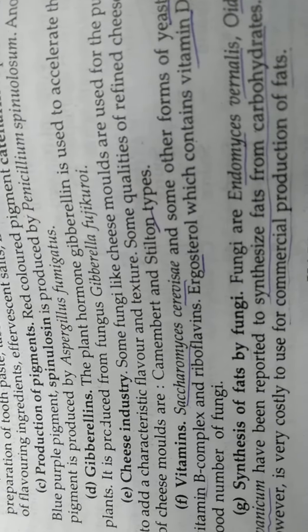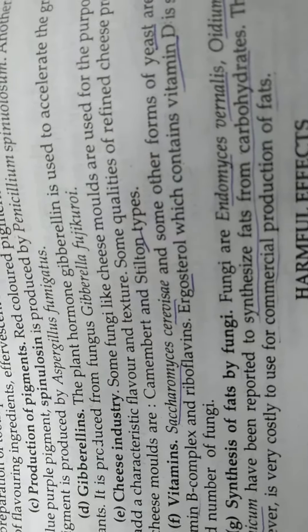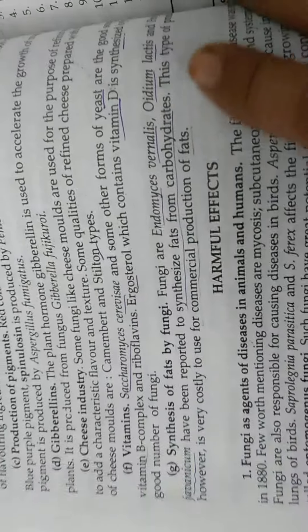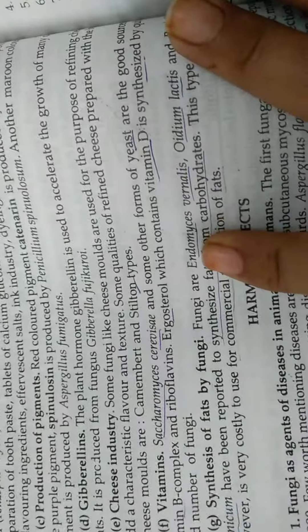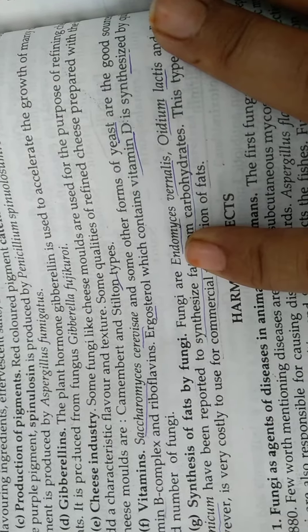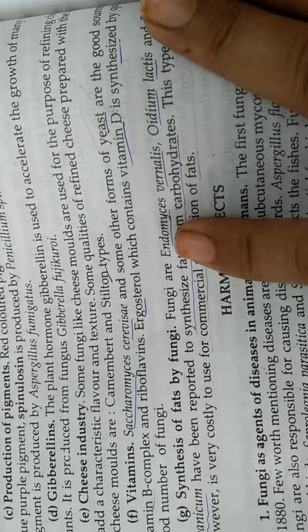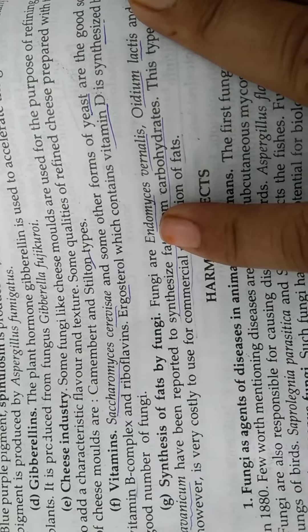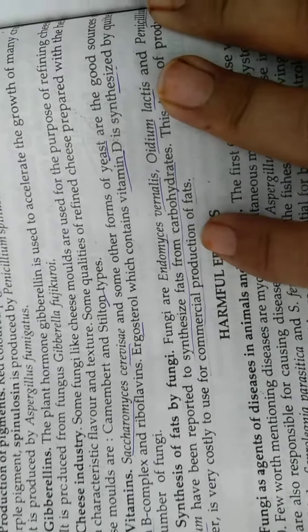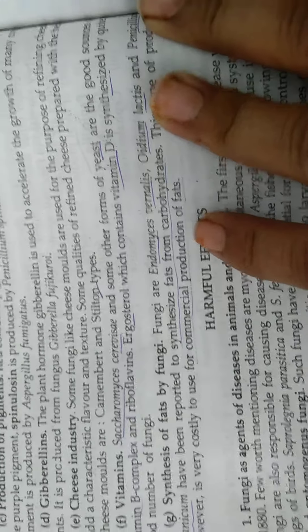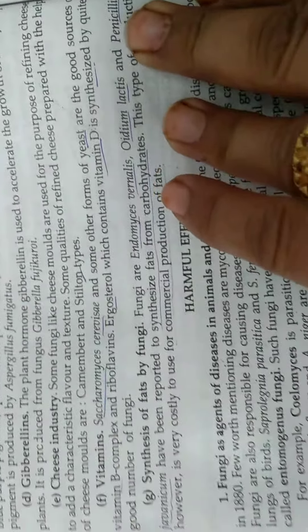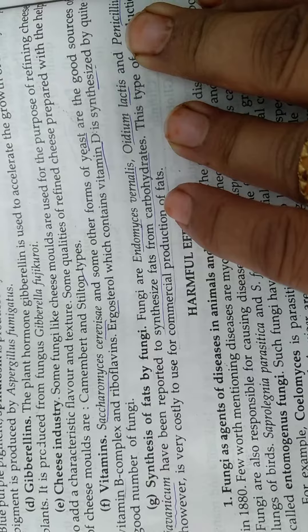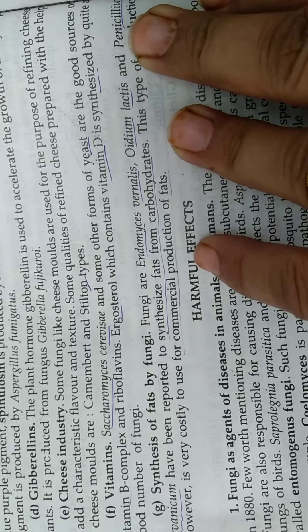In the cheese industry, some fungi like cheese molds are used for refining cheese. The cheese mold is used to add the characteristic flavor and texture to the cheese. Some qualities of refined cheese prepared with the help of cheese mold are Camembert and Stilton type cheeses.